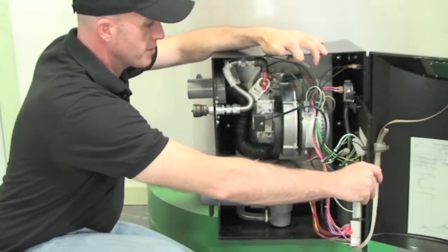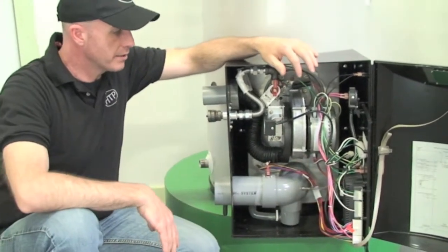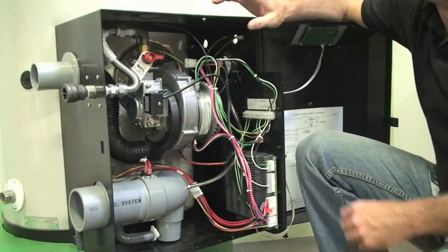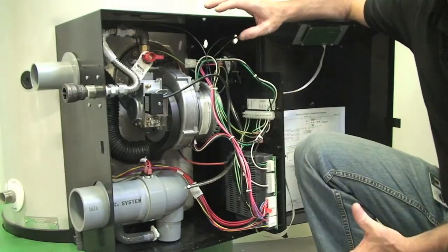This electronic control is nice on a slide, so we can slide it out here and get a good look at it and do some work to it. The Phoenix is a 120-volt, 60-hertz appliance.